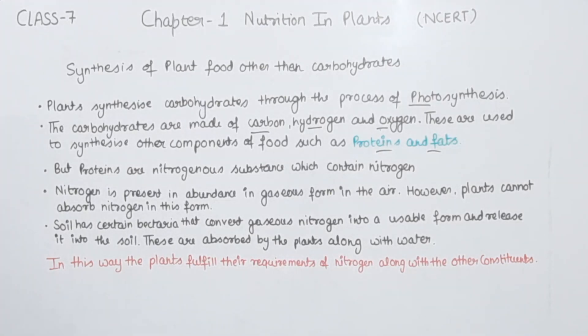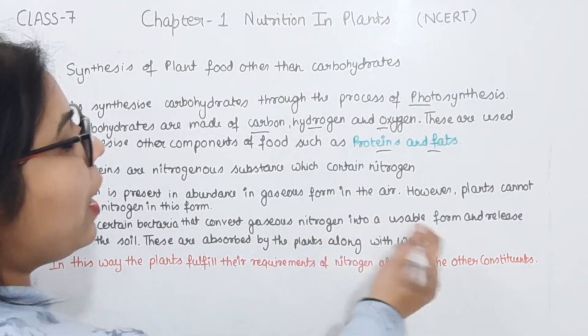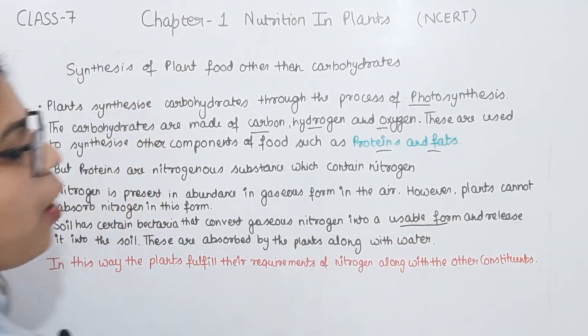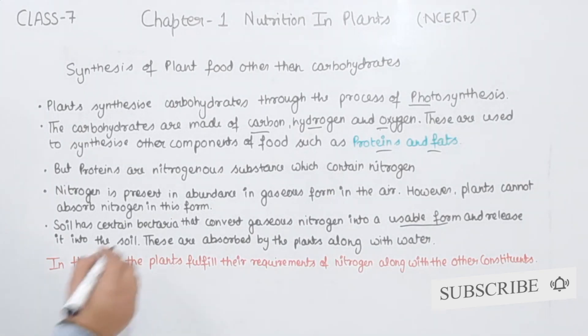Soil has certain bacteria that convert gaseous nitrogen into a usable form and release it into the soil. These are absorbed by the plants along with water. That means these bacteria convert the nitrogen in a form that plants can take.